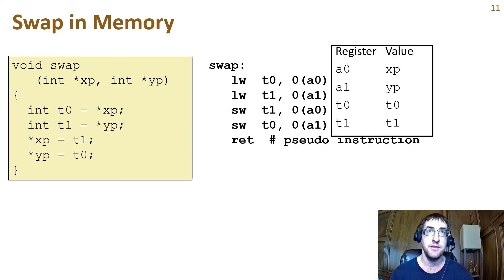The instruction moves the four byte value from the memory location addressed by A0 to the T0 register. The second instruction does the same, but from the A1 pointed location to T1. The third instruction then moves from T1 to the memory location of A0. And the last instruction moves from T0 to the memory location in A1.